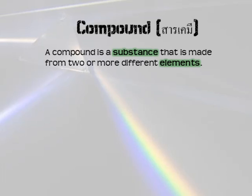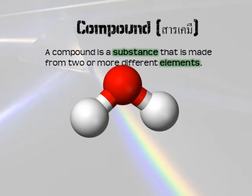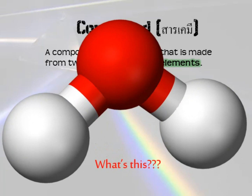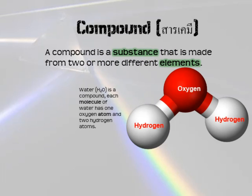Next we have a compound. A compound is a substance that is made from two or more different elements. Basically a compound is anything that is made from more than one different thing. Here is a compound — this is water, sometimes called H2O. Each molecule of water is made from one oxygen atom and two hydrogen atoms. You can see where the H2O comes from: you have two hydrogen (H2) and one oxygen (O).